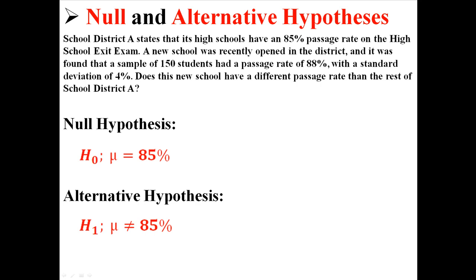In this example, the null hypothesis — basically the assumption we're starting with — is that the mean will be equal to 85%. The alternative hypothesis, or the claim that we're testing, is that the mean is going to be different than 85%.